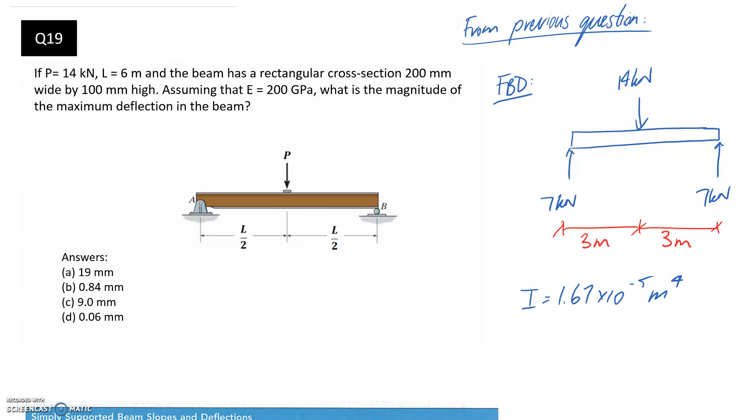Using the same beam as the previous question, we're asked what is the magnitude of the maximum deflection in the beam. So we know that this was a simply supported beam. All that means is that we have a support on either end, as we saw before. And we know that we have our load applied directly in the centre.